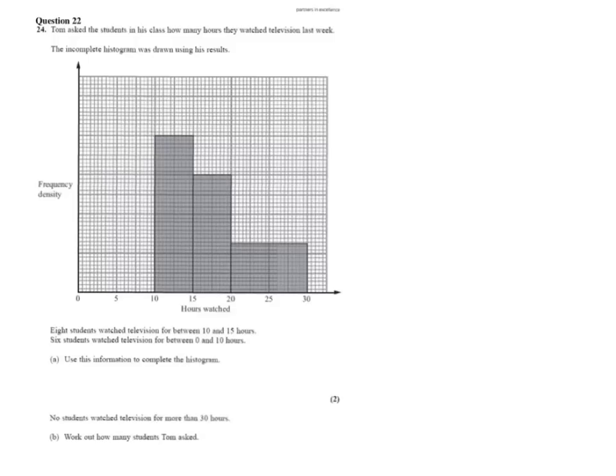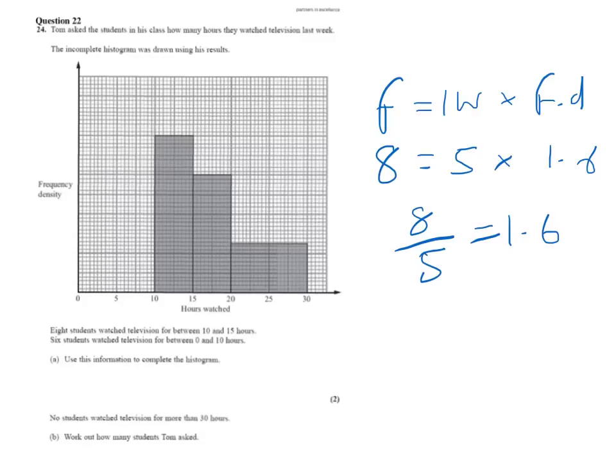Well, if eight students watched TV for between 10 and 15 hours, we know our frequency equals our interval width times our frequency density. We know the frequency is 8. Between 10 and 15 is 5. So the frequency density then to match the 10 to 15 would be 8 divided by 5. 8 over 5 is 1.6. So the frequency density is 1.6.